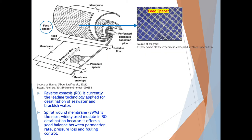Reverse osmosis, or RO, is currently the leading technology applied for desalination of seawater and brackish water. Spiral wound membrane is the most widely used module in RO desalination as it offers a good balance between permeation rate, pressure loss, and fouling control.